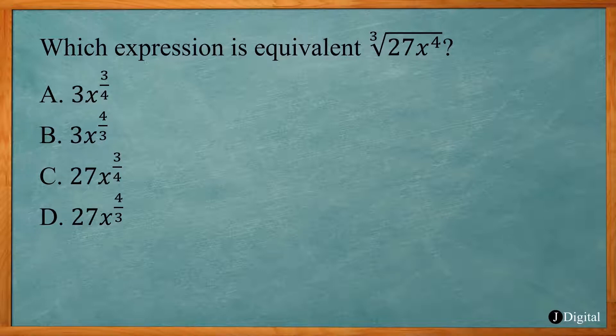This problem says if x is greater than 0, which of the following is equivalent to the given expression. Remember when we have a square root, you want to find things that are squared. So 16 can be written as 4 squared and we have our x squared.